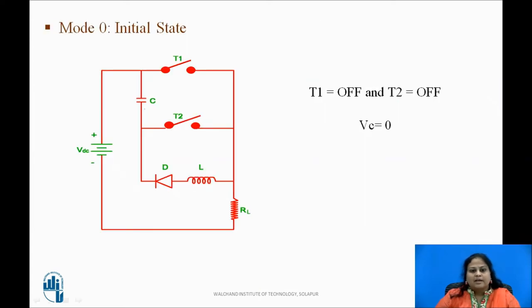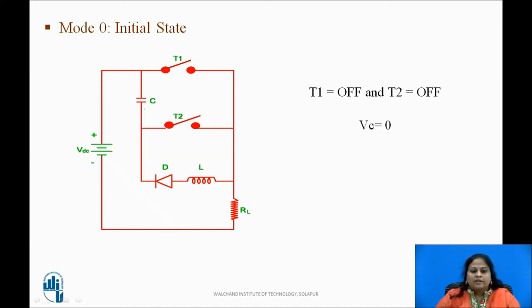Let us see how it works. In the initial state, mode 0, battery Vdc is connected but no current flows through the circuit as both thyristors are off and the diode is reverse biased. Thus, at the end of mode 0, T1 is in off state, T2 is in off state, and Vc equals 0.